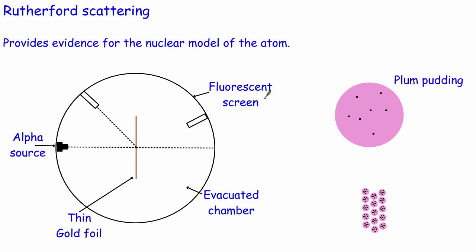Hello and welcome to this video where today we're looking at Rutherford scattering. Rutherford scattering provides evidence for the nuclear model of the atom that we know at this moment in time. In this video we're going to have a look at the actual experiment, the findings of the experiment, and then the conclusions that Rutherford drew from it.